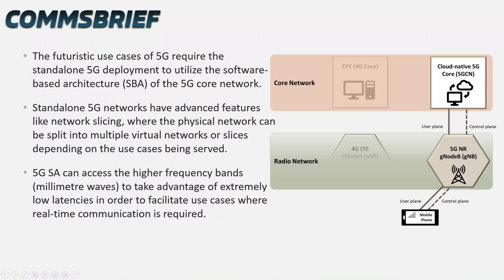The futuristic use cases of 5G require the standalone 5G deployment to utilize the software-based architecture (SBA) of the 5G core network. Standalone 5G networks have advanced features like network slicing, where the physical network can be split into multiple virtual networks or slices depending on the use cases being served. 5G standalone can also access higher frequency bands — millimeter waves — to take advantage of extremely low latencies in order to facilitate use cases where real-time communication is required.